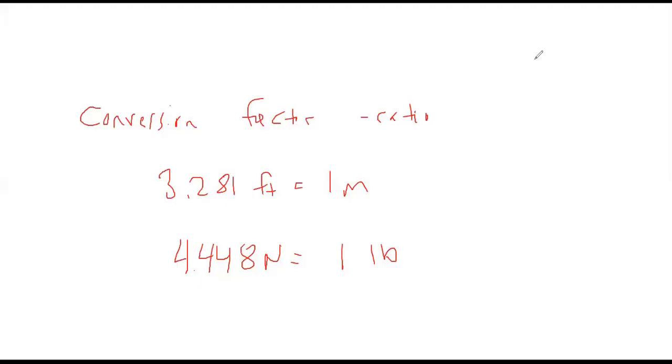This is the factor label method, a method of conversions. Another example of a conversion is 2.54 centimeters equals one inch.